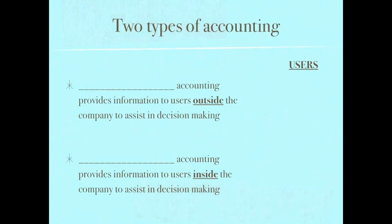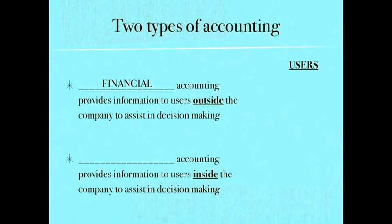There are two types of accounting. The first type is financial accounting. In this area of accounting, we produce those financial statements or reports that provide information to users outside of the company to assist them in decision making. For example, an investor needs to know your financial information to be able to make an informed decision as to whether they want to invest in your company or not.